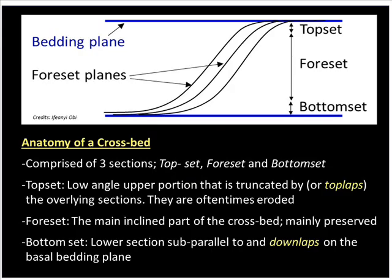We'll look at the anatomy of a crossbed. A crossbed is comprised of three sections: the top set, the foreset, and the bottom set.